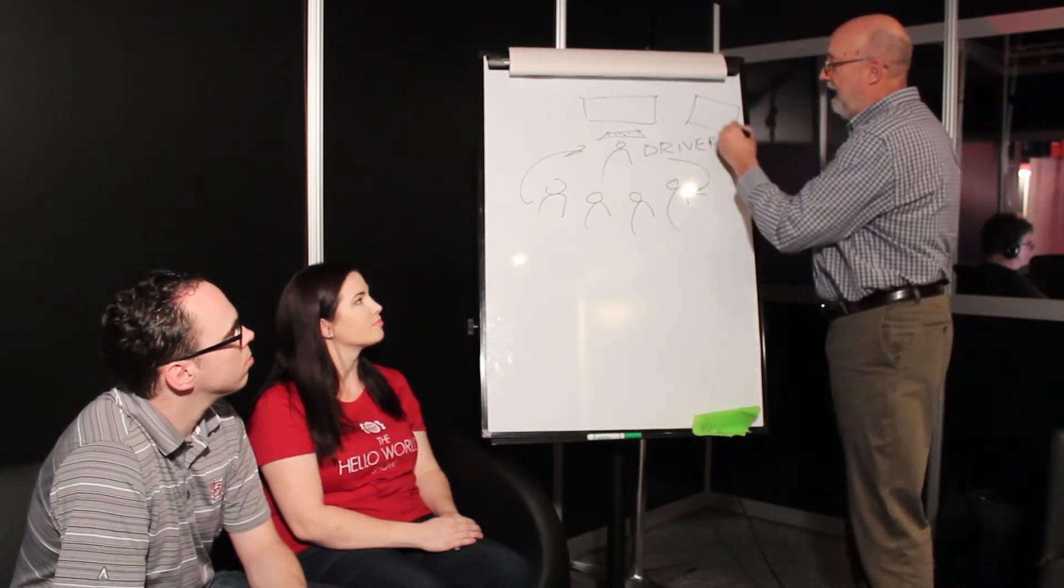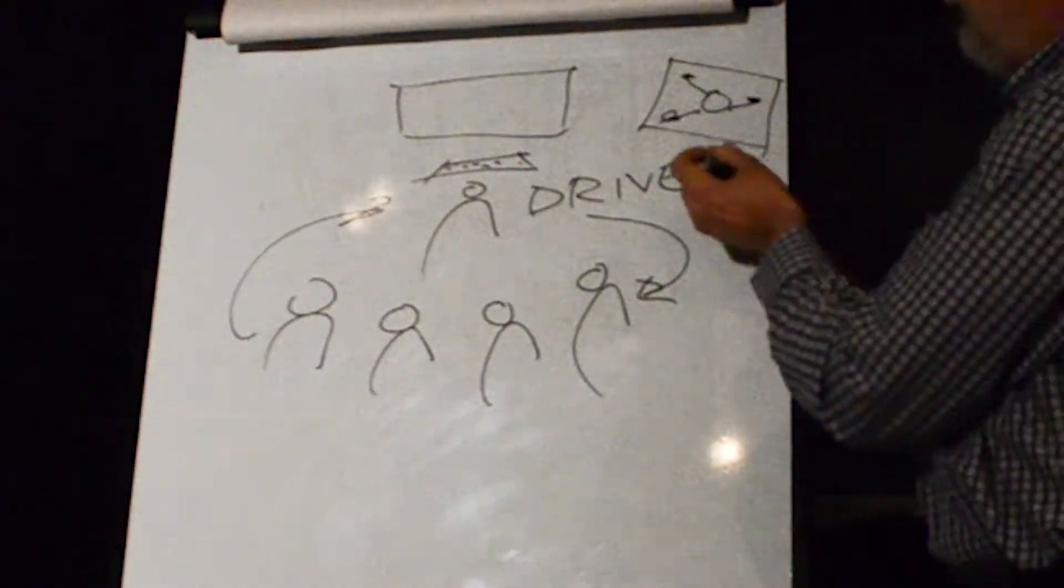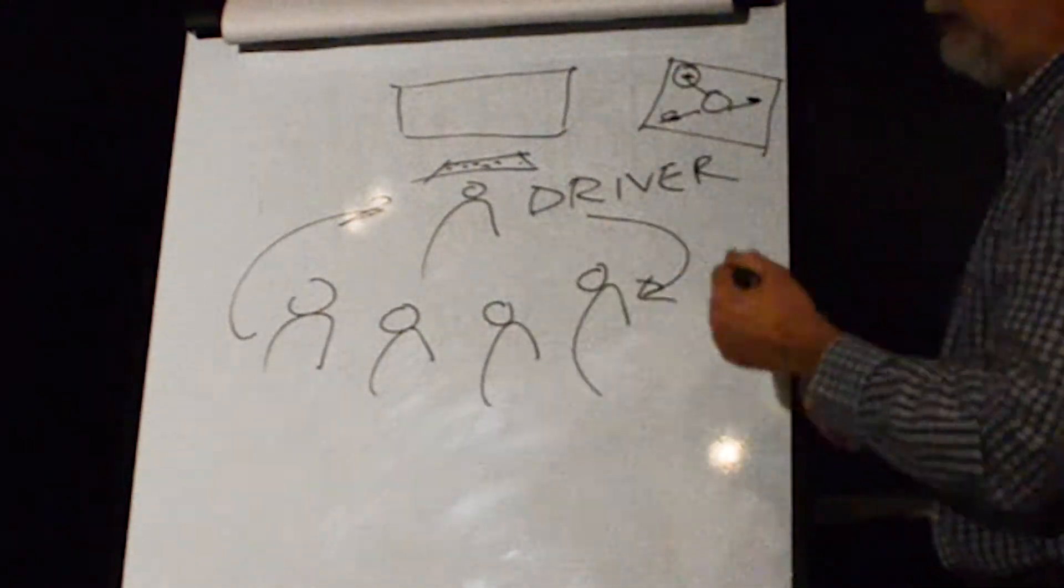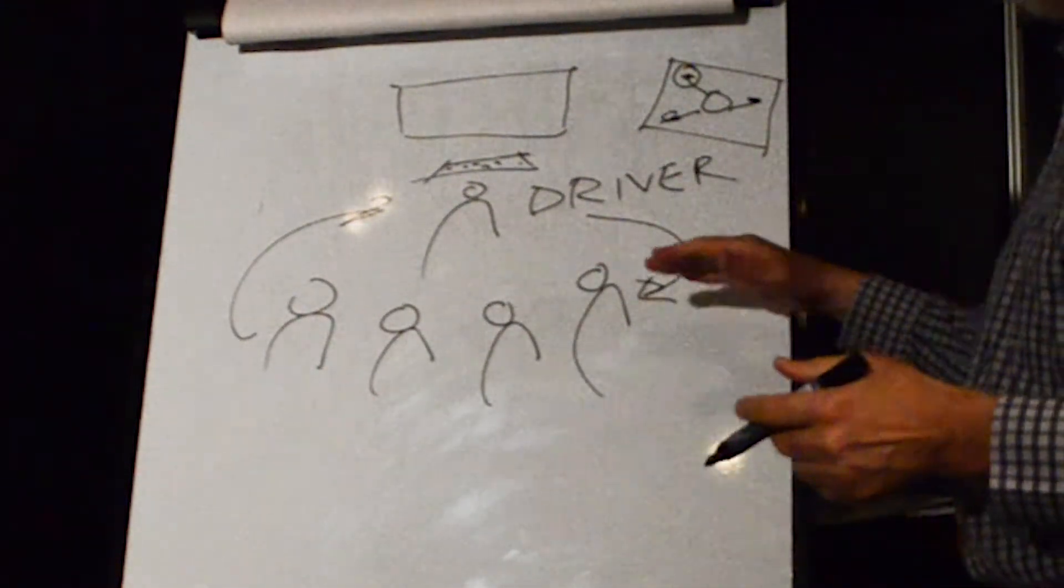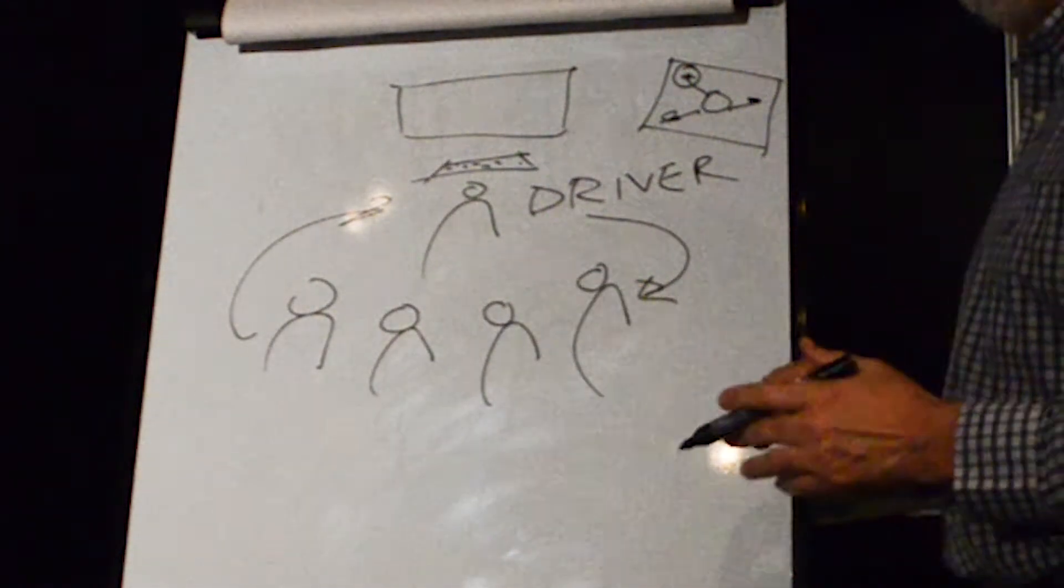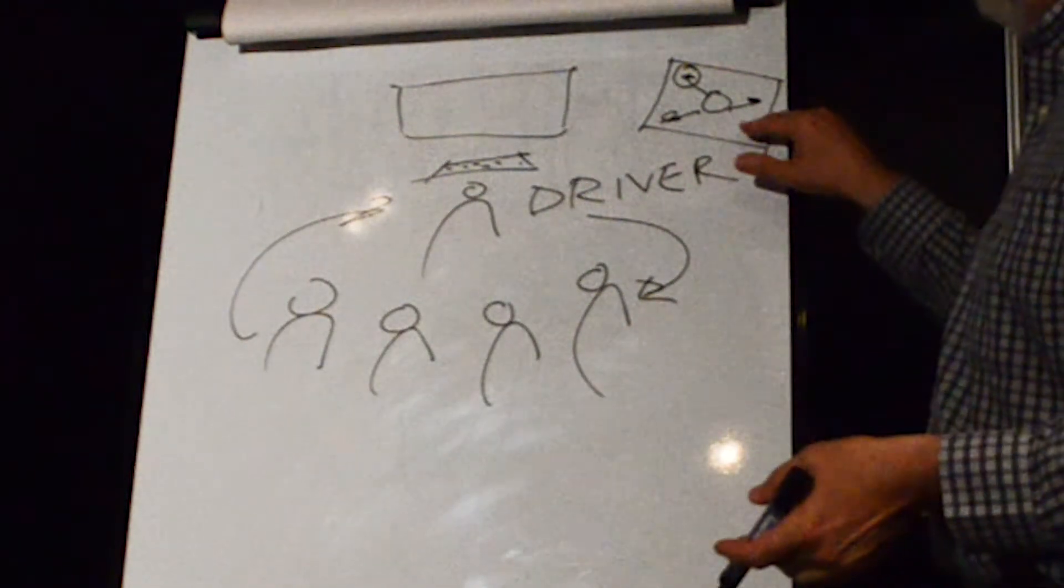We might go to a whiteboard and we will draw a diagram of how these different elements are going to work together. And we could say, okay, we need to send an email. And we will go to that part and we'll start working on it. As we describe what we're doing, the driver keys that into the keyboard. Everybody else is reviewing the code in real time. Everybody else is reviewing the idea we're having.